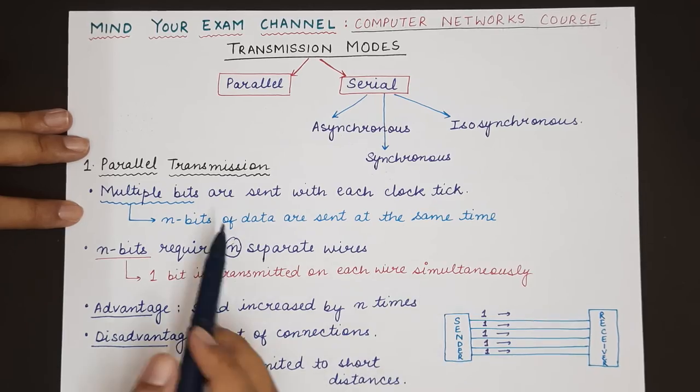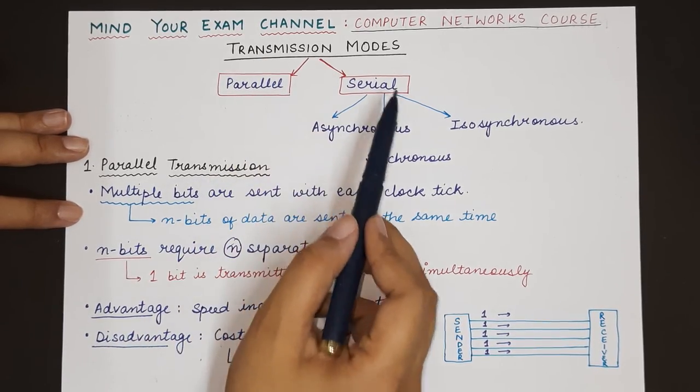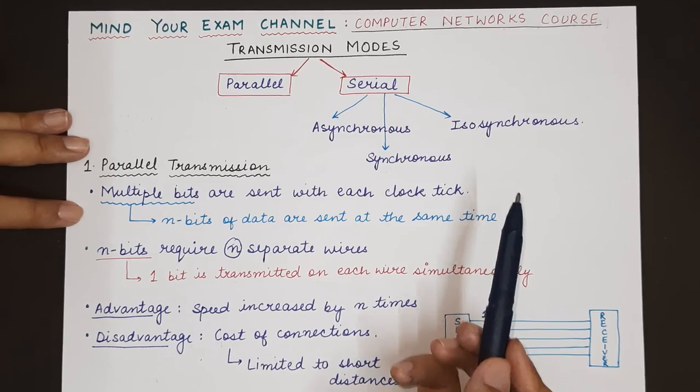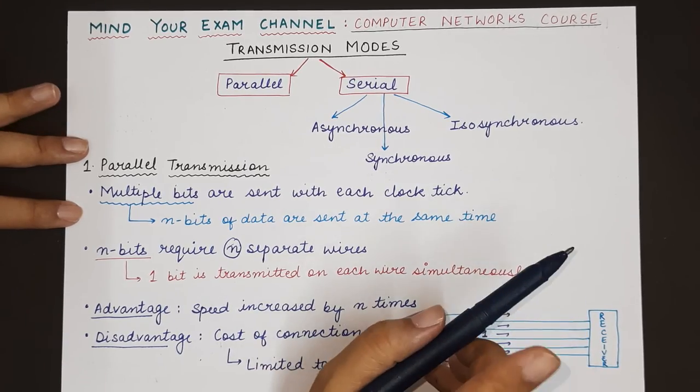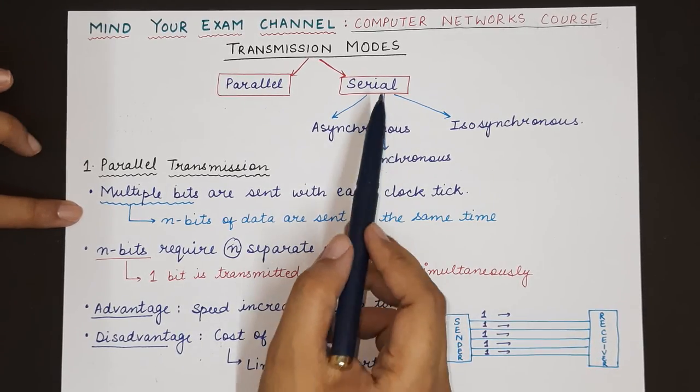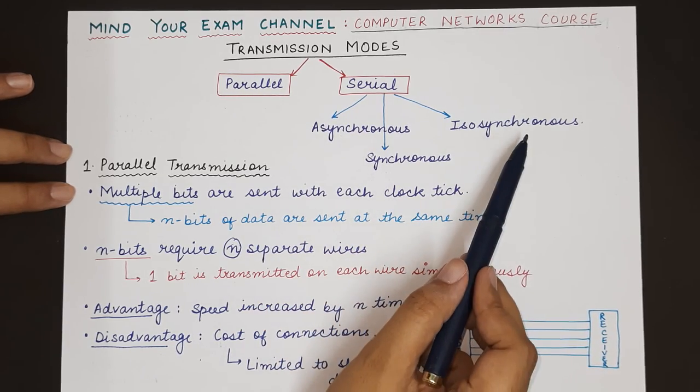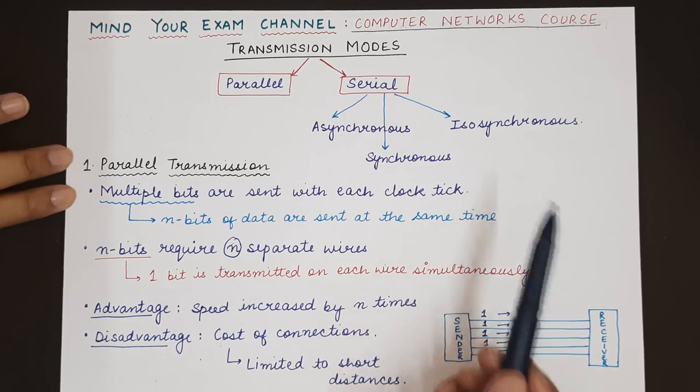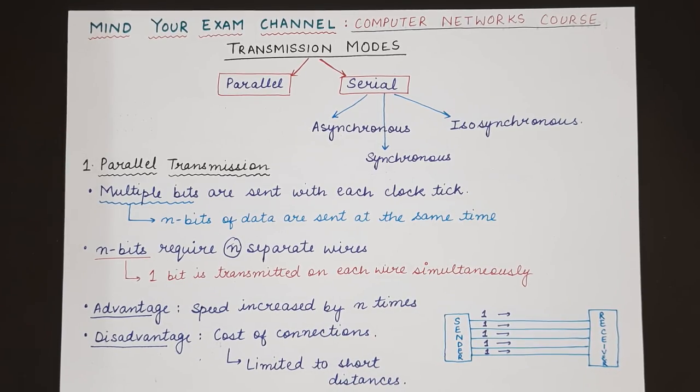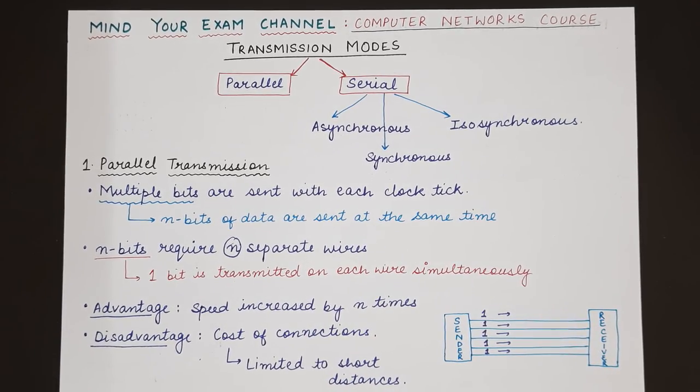This was about parallel transmission and the three types of transmission modes. In the next video we will be studying about what is serial transmission and the different types of serial transmissions—asynchronous, synchronous, and isochronous serial transmission modes. That's all for today's video. I hope you have understood this topic.